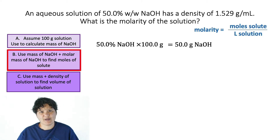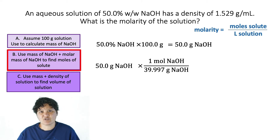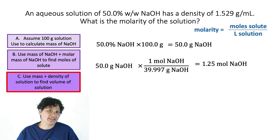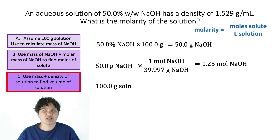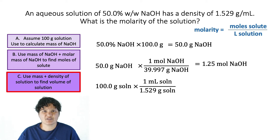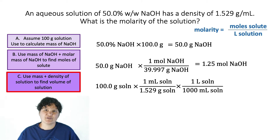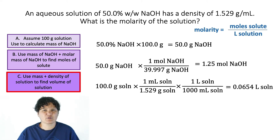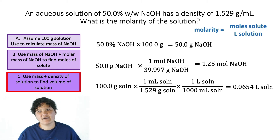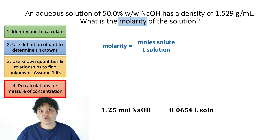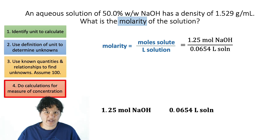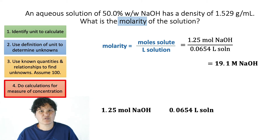In step B, take those 50 grams of sodium hydroxide and use the molar mass to convert to moles, giving you 1.25 moles of sodium hydroxide. In step C, take your total mass of 100 grams and use the density as a conversion factor — each milliliter of solution weighs 1.529 grams — and converting milliliters to liters, 100 grams of solution equals 0.0654 liters. Plug those quantities into the definition of molarity and you find a 19.1 molar solution of sodium hydroxide.